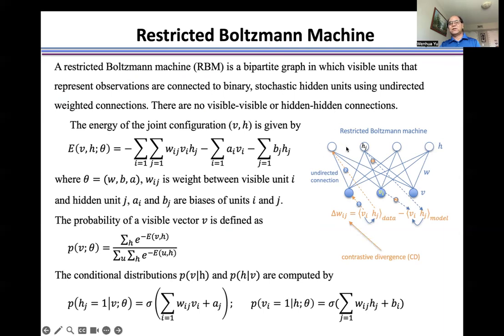There are no visible-to-visible or hidden-to-hidden connections. The energy of the joint configuration v and h is given by this formulation, which includes three parts.